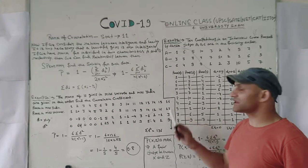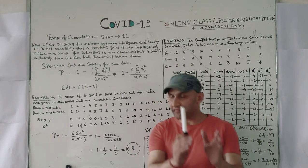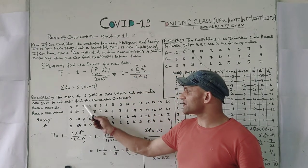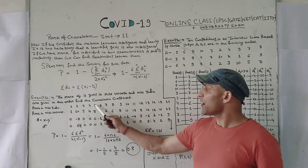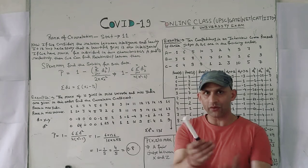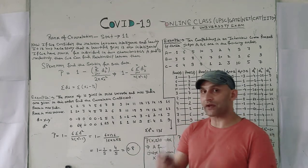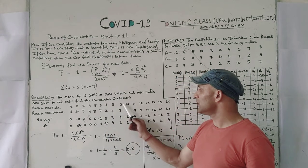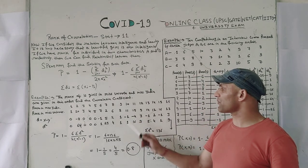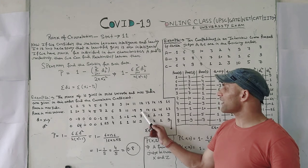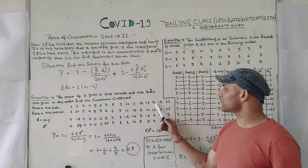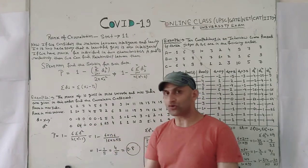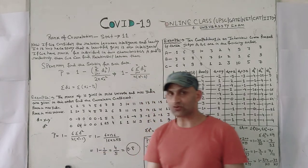Continuing the data: girl 9 has rank 9 and 8; girl 10 has rank 10 and 11; girl 11 has rank 11 and 15; girl 12 has rank 12 and 9; girl 13 has rank 13 and 14; girl 14 has rank 14 and 12; girl 15 has rank 15 and 16; girl 16 has rank 16 and 13. Now at first we find the difference d = x minus y: 1-1=0, 2-10=-8, 3-3=0, 4-4=0, 5-5=0, 6-7=-1, 7-2=5, 8-6=2.